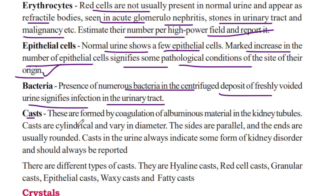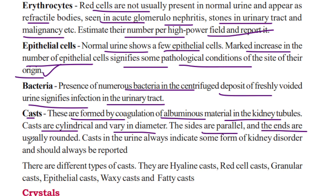Casts are formed by coagulation of albuminous materials in the kidney tubules. Casts are cylindrical and vary in diameter. The sides are parallel and the ends are usually rounded.